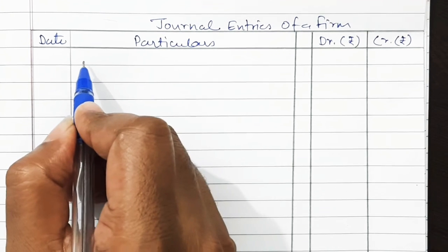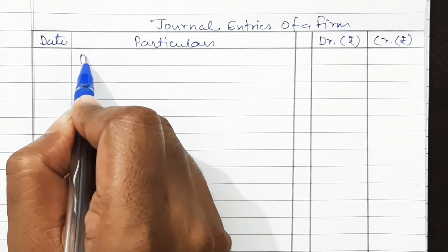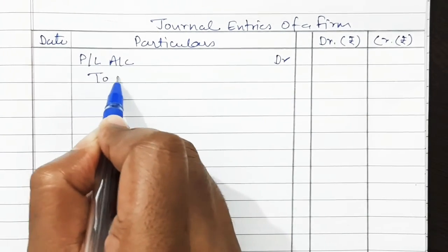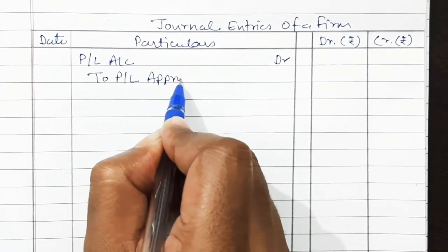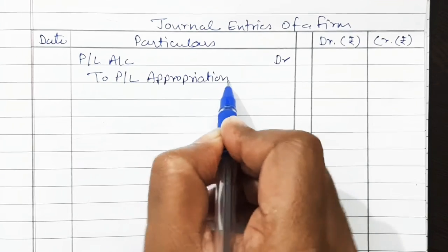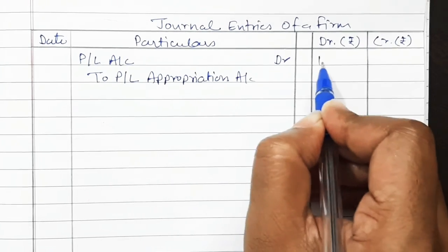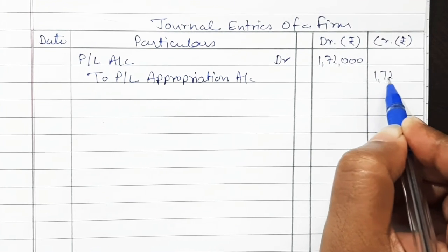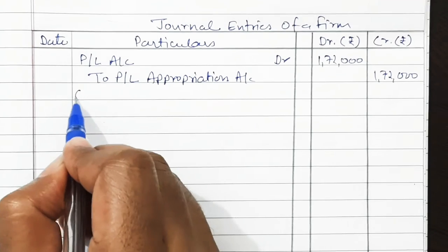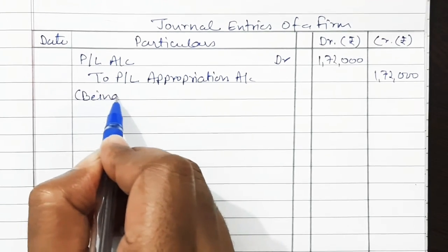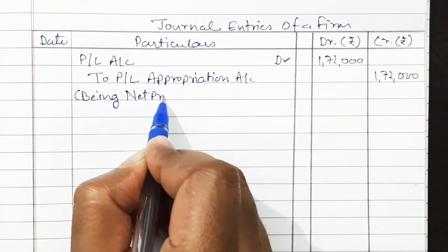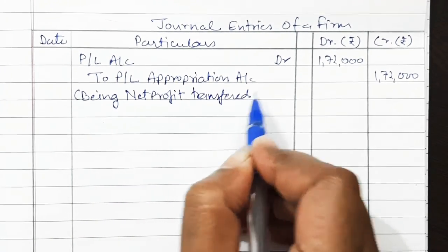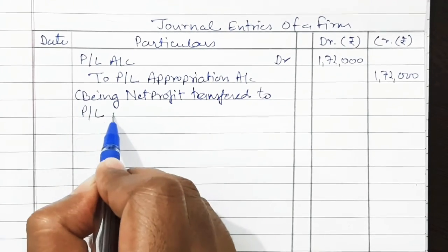We will show this in the Profit and Loss Appropriation Account: A will get Rs. 50,000, B will get Rs. 44,000, and C will get Rs. 46,000. Journal entry: Profit and Loss Account debited to Profit and Loss Appropriation Account Rs. 1,72,000, being net profit transferred to Profit and Loss Appropriation Account.